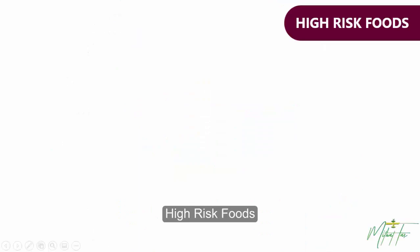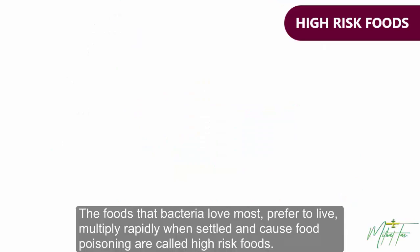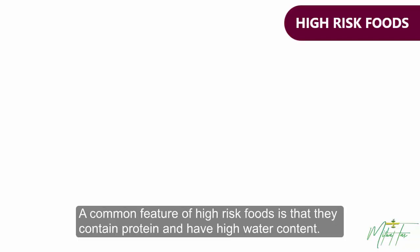High Risk Foods. The foods that bacteria love most, prefer to live in, multiply rapidly when settled, and cause food poisoning are called high risk foods. A common feature of high risk foods is that they contain protein and have high water content.